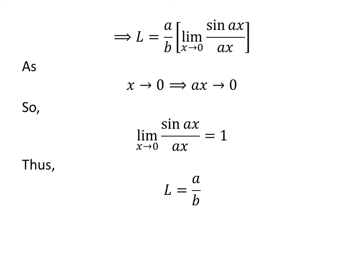So, the limit of sin of a times x upon b times x as x approaches 0 is equal to a upon b.